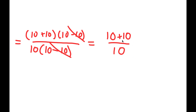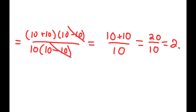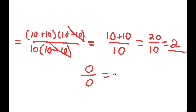Well, 10 plus 10 is 20. So I have 20 over 10, and 20 divided by 10 is 2. So there — I just proved that 0 over 0 is equal to 2.